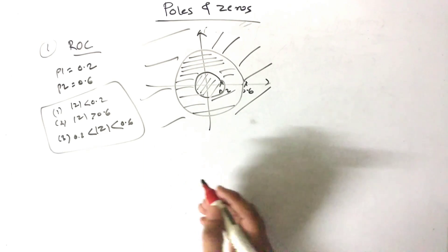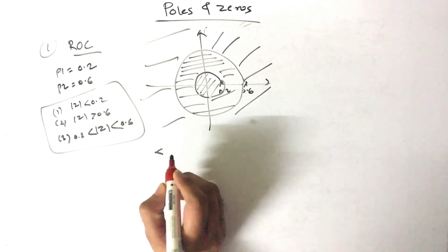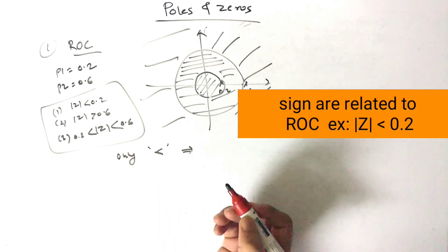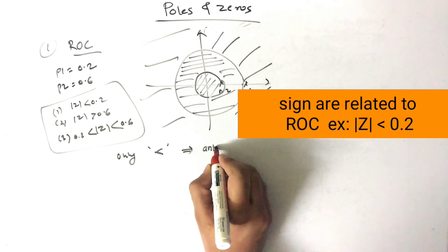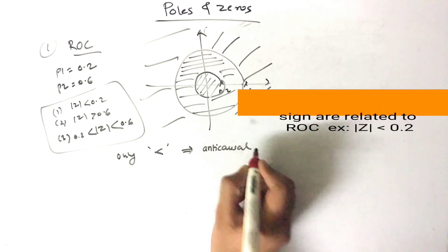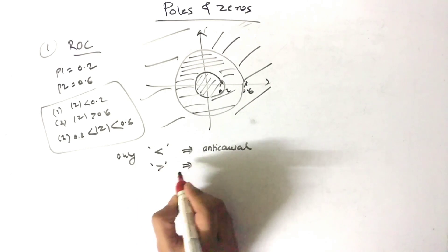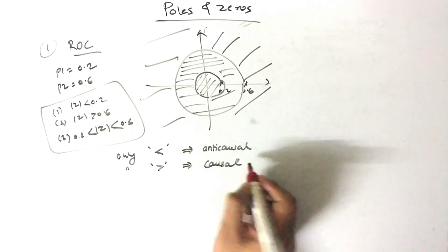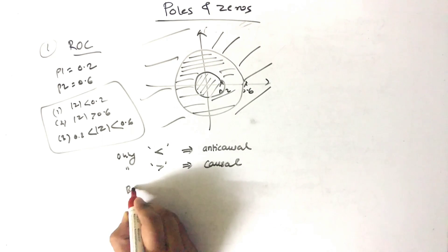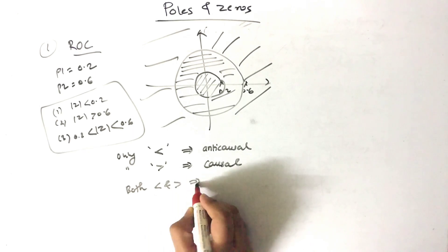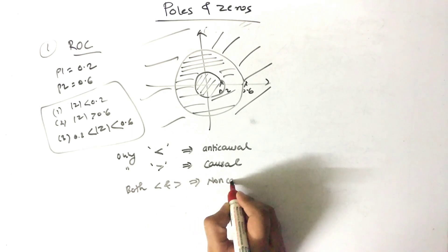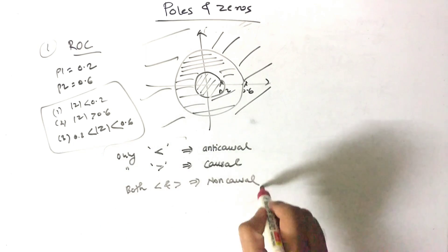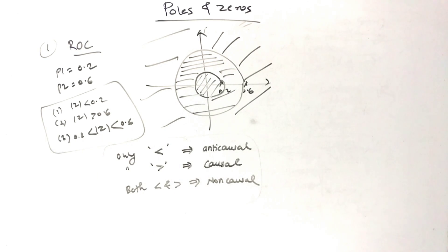There is one trick: if you see only a less-than sign in your ROC, the system is anti-causal. If you see only a greater-than sign, the system is causal. If you have both less-than and greater-than signs, the system is non-causal.